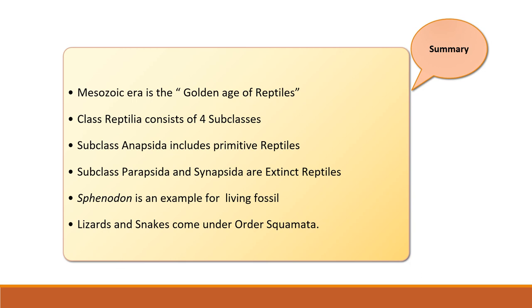In a nutshell, the Mesozoic era is referred to as the golden age of reptiles. Class Reptilia consists of four subclasses. Subclass Anapsida includes primitive reptiles such as tortoises and turtles. Subclass Parapsida and Subclass Synapsida are extinct reptiles. Subclass Diapsida consists of order Rhynchocephalia, order Squamata, and order Crocodilia. Sphenodon is an example of a living fossil, and lizards and snakes come under order Squamata.